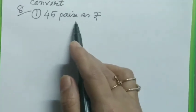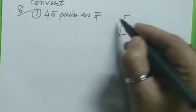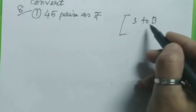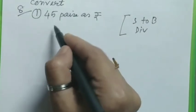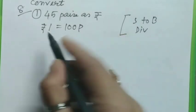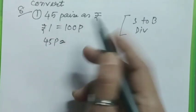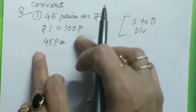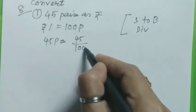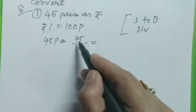Paise is small and rupee is big, so we are converting small to big. What to do in this case? Exactly, we will do division. What is the relation? Rupee 1 equals 100 paise. This is the relation, and therefore we will divide by 100. 45 paise equals 45 divided by 100.